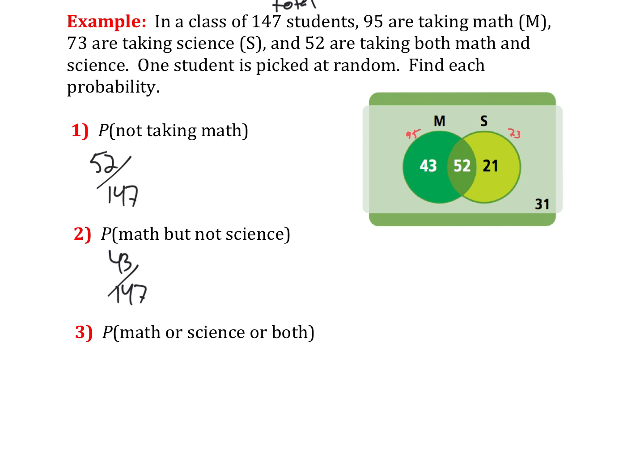And then lastly, what is the probability that a student is taking math or science or maybe both? So basically, they're somewhere in one of these circles. Well, there's 43, 52, and 21. Those are the numbers that are in one or both of those circles. And we have a total of 147. And we would simplify that out.